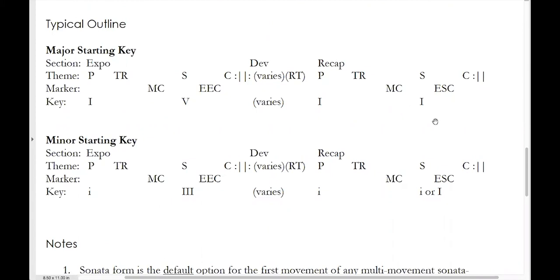So that's a summary of a major mode sonata form. Major mode sonata forms, especially in the late 18th century, are much more common than minor mode sonata forms, though of course minor mode sonata forms do exist.